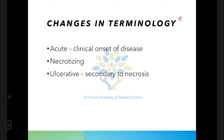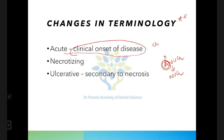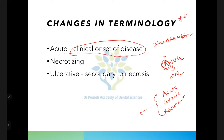Now, an important topic: changes in terminology. Initially it was called ANUG, but later the term 'acute' was removed, giving us NUG. Why? Because 'acute' is a clinical descriptor indicating rapid onset or severity. Clinical descriptors like acute, chronic, and recurrent should not be used in diagnosis. Since 'acute' denotes the clinical onset of disease rather than its nature, it has been removed from the terminology.